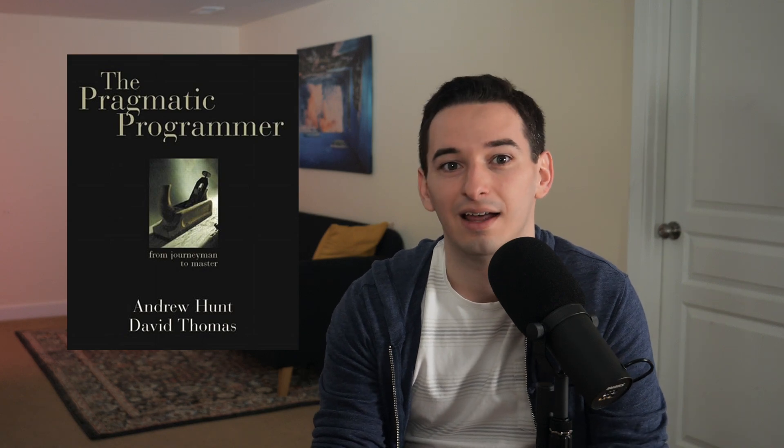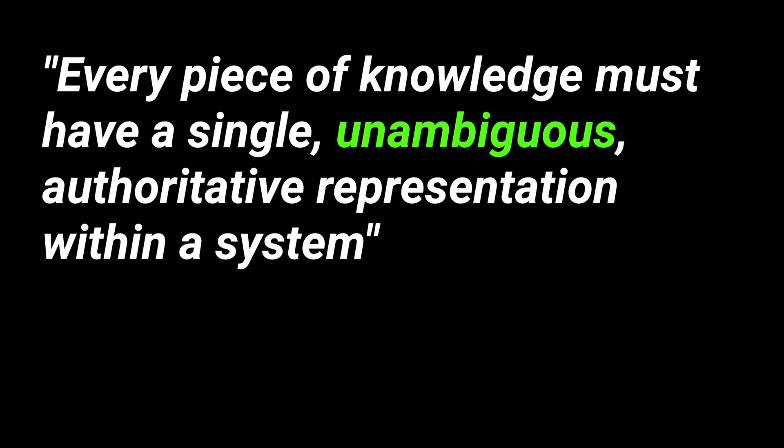The origination of the DRY principle was in the book The Pragmatic Programmer, and it stated: every piece of knowledge must have a single, unambiguous, authoritative representation within a system. Note that this does not say code should not repeat — it's about knowledge not being repeated. Good DRY code means that if you change some part of the codebase, it's not going to have a ripple effect on some other unrelated part. A good test is to ask yourself: if a future developer was to change this code, would they know of all the effects that are going to happen? If the answer is no, you most likely have too tight of coupling and should separate that logic.